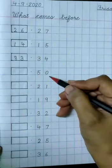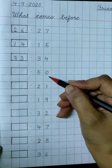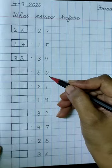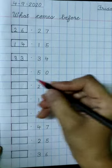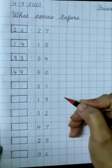Our next number is 5-0-50. What comes before 50? 49, 50. 49 comes before 50. So write 4, 9, 49 in this box.